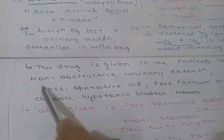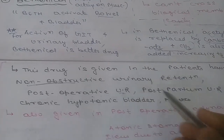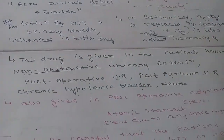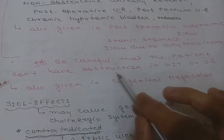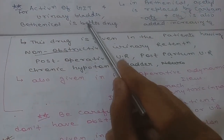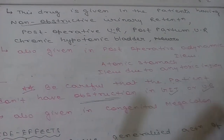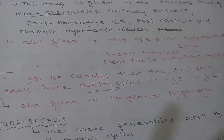Bethanechol is given in patients with non-obstructive urinary retention, post-operative urinary retention, postpartum urinary retention, and chronic hypotonic bladder. It is also given in post-operative adynamic ileus or atonic stomach. It is important to ensure the patient does not have obstruction in the GIT or urinary bladder before giving this drug. It is also given in congenital megacolon.